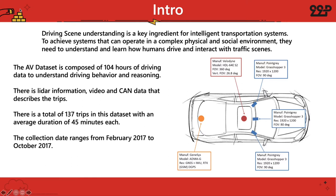This dataset is composed of 104 hours of driving data to understand driving behavior and reasoning. There is LiDAR information, video, and CAN data that helps describe all of these trips. There is a total of 137 trips in the dataset with an average duration of around 45 minutes each. The collection date ranges from February 2017 to October 2017, and the image on the right shows the different sensors attached to the vehicle, their field of view, and things like their resolution.